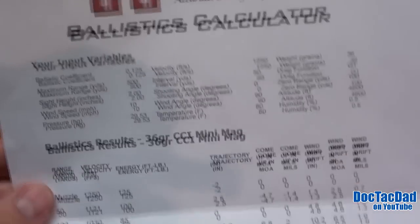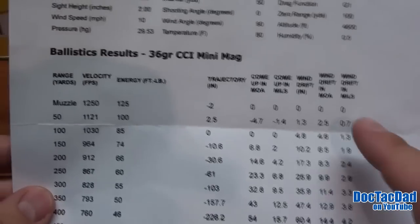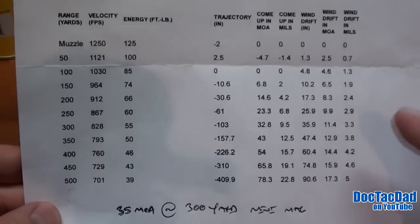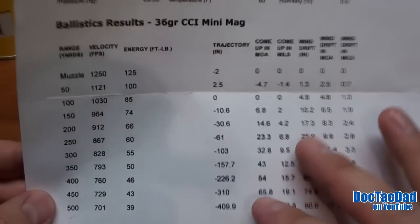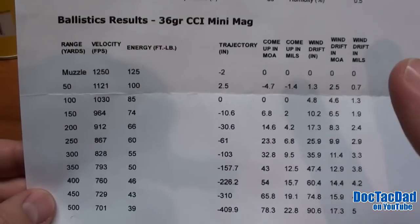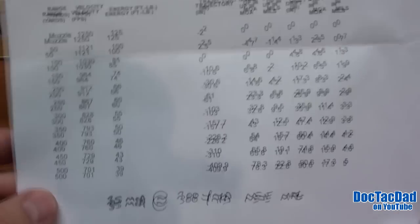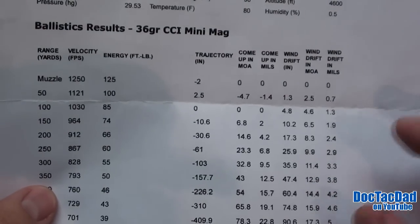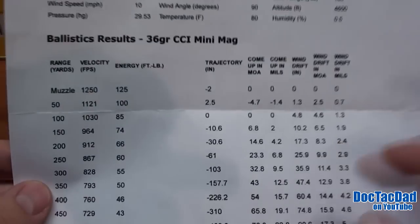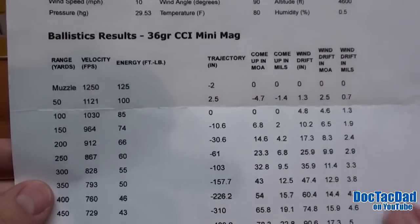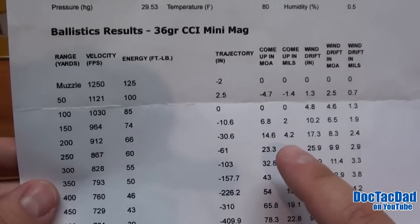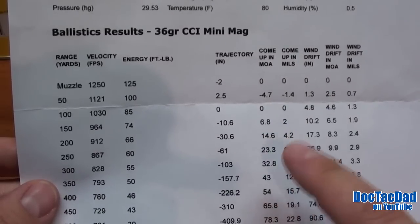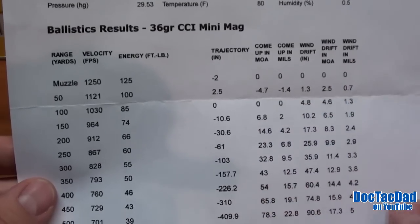You can enter in all your information, print off a drop chart, including wind drift. And what I like about this is if you print off your information, your calculations, then you can annotate and write in your weather conditions and real-world application, and you can test this theoretical information on paper with real-world application.